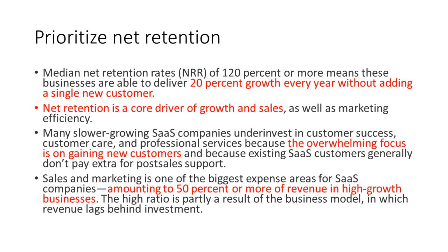Net retention is probably the second most important metric. Median net retention rates of 120% or more means businesses can deliver 20% growth every year without adding a single new customer — that's very powerful. When we see a firm like Splunk hiding their net retention rate because it's been sliding and just fell below 120%, we have concerns. Net retention is a core driver of growth and sales and marketing efficiency. Many slower-growing SaaS companies underinvest in customer care because the focus is overwhelmingly on gaining new customers. Sales and marketing can amount to 50% or more of revenue in high-growth SaaS businesses.